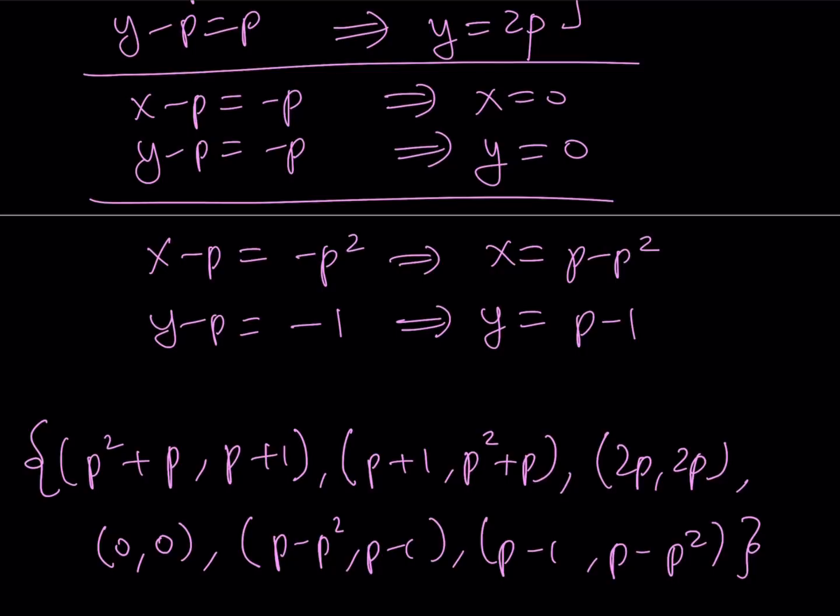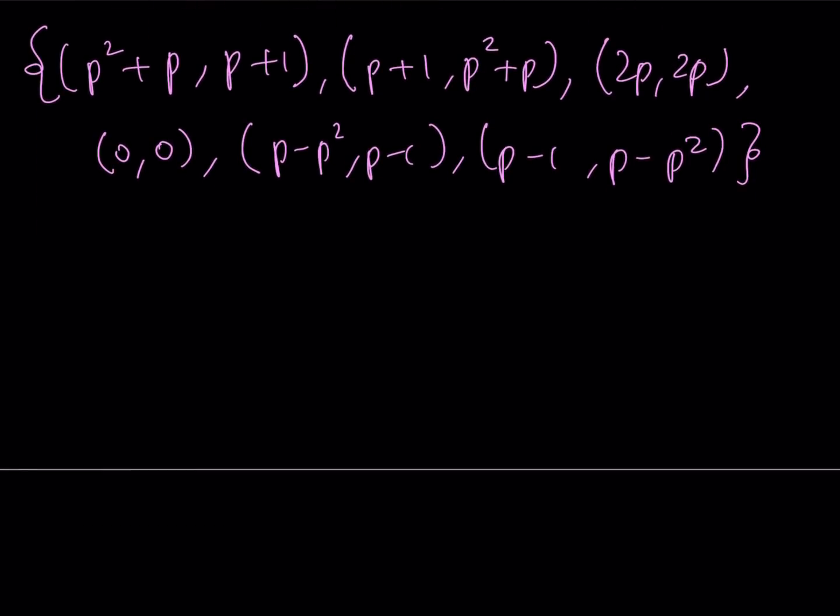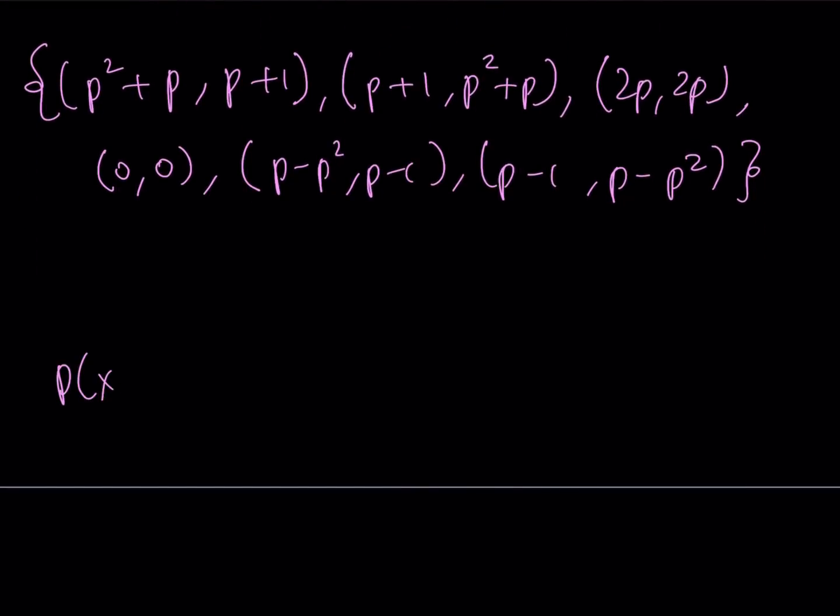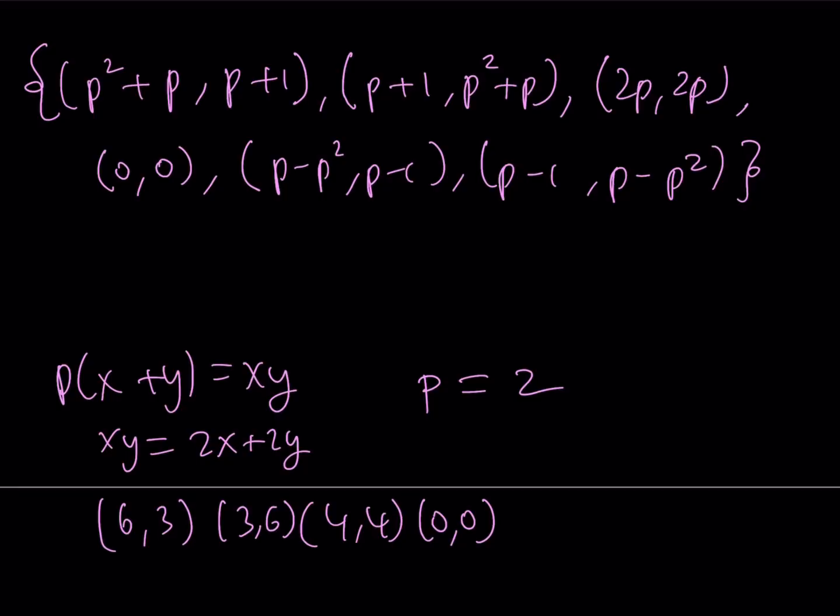Now, I said that I was going to look at some particular cases. Let's go ahead and look at those. So, for example, our original equation was P times the quantity X plus Y is equal to XY. So if you say that, for example, I want P to be 2, I want XY is equal to 2X plus 2Y, something like this. In which case, you're going to have the following solution. 2 squared is going to be 4. So 4 plus 2 is equal to 6. So 6, 3 is going to be a solution. Of course, 3, 6 is another one. Then you can talk about 4, 4. You can talk about 0, 0. So on and so forth. So all these are going to be valid solutions. P minus P squared is going to be 2 minus 4, which is going to be negative 2. P minus 1 is going to be 1. And if you switch around, you're going to get 1, negative 2. So for this particular case, we get these solutions.